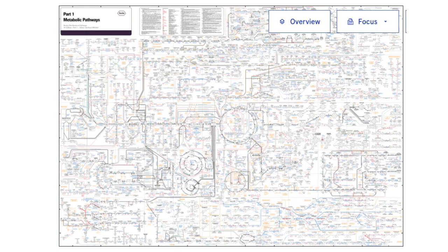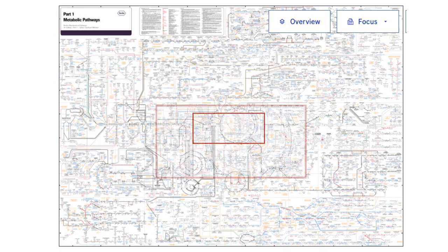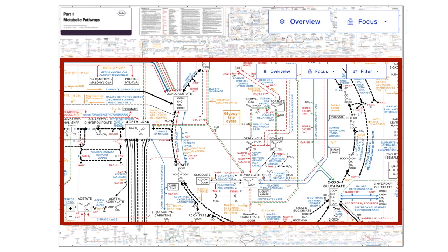This is an image from the website of a biotech company called Roche. In it, they provide an interactive map of all the known chemical reactions in a cell. We call these chemical reactions metabolic pathways. As you can see, there is a lot going on in this image. You can zoom in on any part of the map to get a more detailed view. The map is quite neat to explore — you can set filters and even search for specific molecules. It is free to use, so I have added a link to the website in case you want to explore the map yourself.